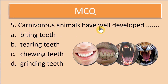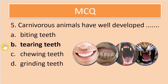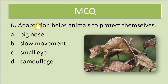Question number five: carnivorous animals have well-developed — biting teeth, tearing teeth, chewing teeth, or grinding teeth? They have well-developed tearing teeth, because they have to tear flesh, and that is why they have well-developed tearing teeth.